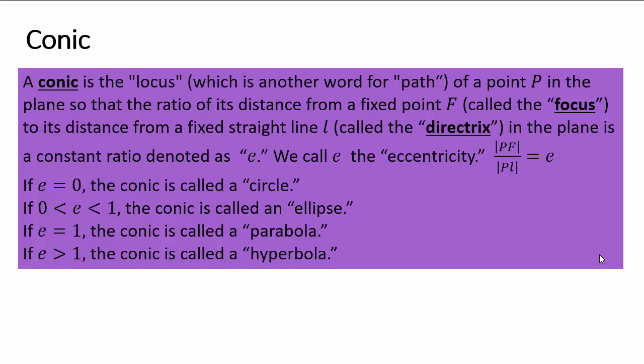If e is zero, we get a circle. If e is between zero and one, we get an ellipse. If e equals one, we get a parabola, and if e is greater than one, we get a hyperbola. The fixed point is called the focus, and the fixed line is called the directrix.